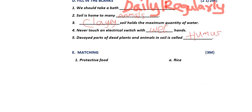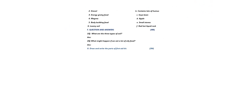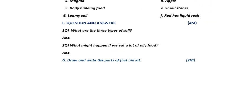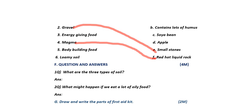Now moving to match the following. Gravel means small stones, so gravel matches with option E. Magma means red hot liquid rock — that is another option. Loamy soil contains a lot of humus, so loamy soil matches with option B.